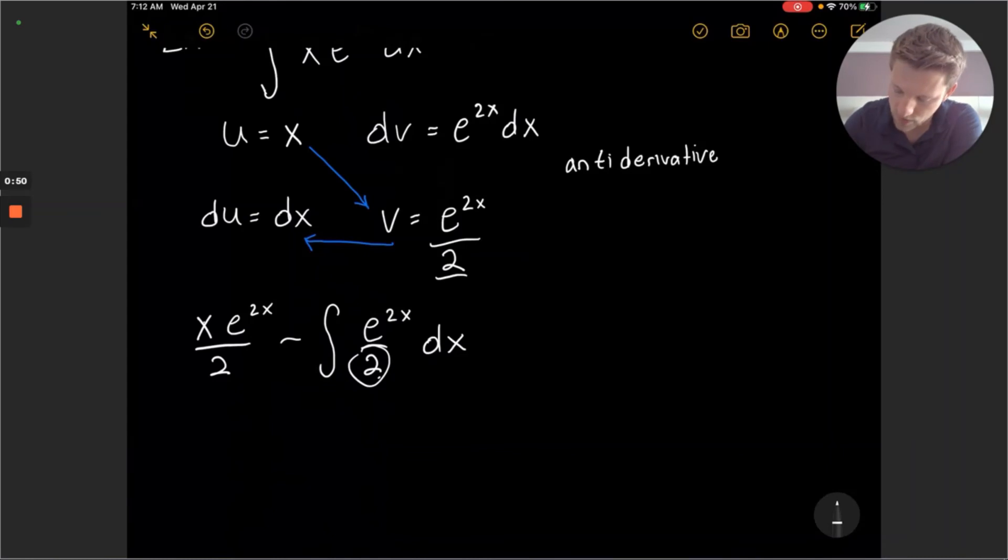So we can rewrite this as x e to the 2x over 2. Minus will come out as a 1 half for the 2 that's already in my integral. And the integral of e to the 2x here is e to the 2x over 2.